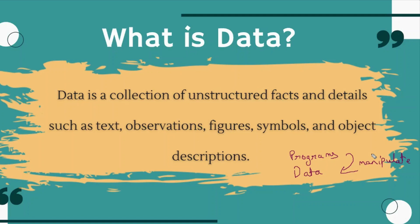If you see images, videos, audios, and text messages, that will also be data. You have also seen data in the form of a table — data can be represented in a table in the form of rows and columns, and that will be structured data. We will talk about structured and unstructured data when we discuss the different types of data. You can also say data is information that has been translated into a form that is efficient for movement or processing.